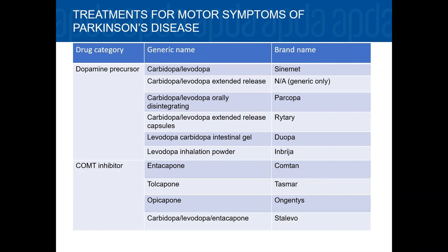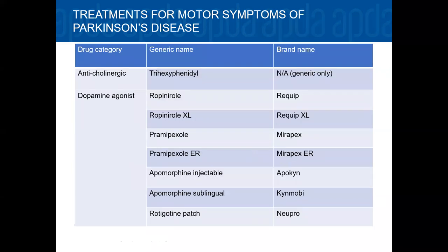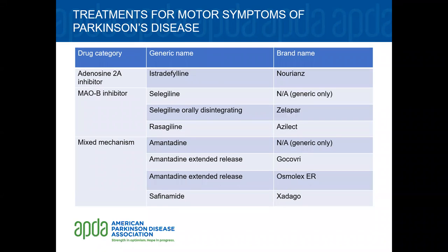COMT inhibitors prevent the breakdown of levodopa in the bloodstream and must be taken along with levodopa. Anticholinergic medications improve dopamine signaling but can have many side effects, including effects on thinking and memory, so they are used sparingly, particularly in older populations. Dopamine agonists mimic dopamine in the brain and are available in many formulations: short-acting, long-acting, injectable, patch, and sublingual film — they need to be used carefully in the elderly. Adenosine 2A inhibitors are a relatively new category that act on particular neurons to enhance dopamine signaling. MAOB inhibitors inhibit the breakdown of dopamine within the brain. Amantadine, in immediate and extended release versions, acts in more than one way to improve PD symptoms.